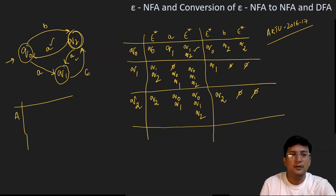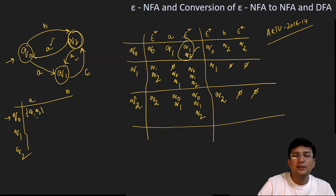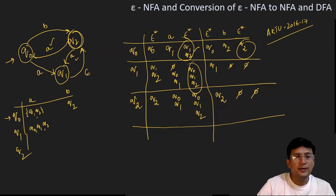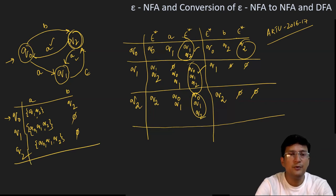So the states are Q0, which is also the start state, then Q1 and Q2. We define the transitions with A and B. Q0 on getting symbol A moves to Q1 and Q2. Q0 on getting B moves to Q2. Q1 on getting symbol A moves to Q0, Q1, and Q2, by taking the union of all these states. Q1 on B is undefined. Q2 on getting A moves to Q0, Q1, and Q2. Q2 on B is undefined. This is the transition table for the NFA. Now we have to draw the DFA.